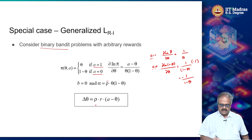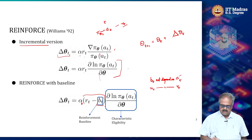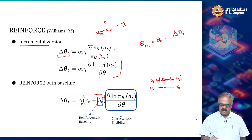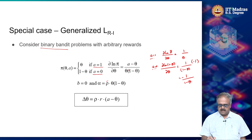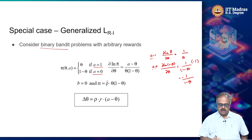Plugging everything into the expression — α × (r_t − b_t) × d(ln π)/dθ — I basically end up with the update: Δθ = ρ × r × (a − θ).